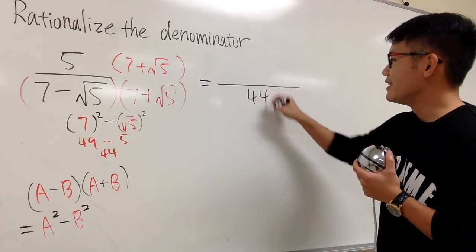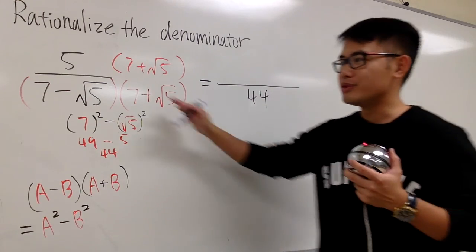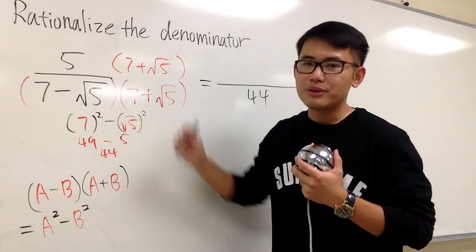So overall, in the denominator, we just have a nice number, 44. So be sure you do this, and then you can do some computations right here, like that.